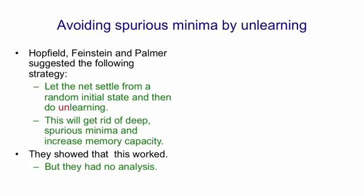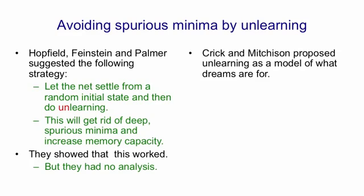Hopfield, Feinstein and Palmer showed that this actually worked, but they didn't have a good analysis of what was really going on. Francis Crick, one of the discoverers of the structure of DNA, and Graham Mitchison proposed that unlearning might be what's going on during REM sleep — that is, rapid eye movement sleep. The idea was that during the day you store lots of things and get spurious minima. Then at night you put the network in a random state, settle to a minimum, and unlearn what you settled to, and that actually explains a big puzzle.